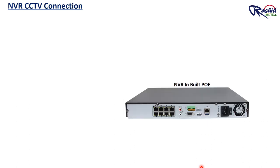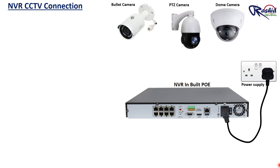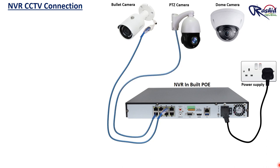Let's see the connection of CCTV. First, we feed 240-volt AC power supply to NVR. We are installing one bullet camera, one PTZ camera, and one dome camera. With the help of Ethernet extension cable and RJ45 connector we can connect cameras with NVR. Same way we will do all connections of cameras with NVR.